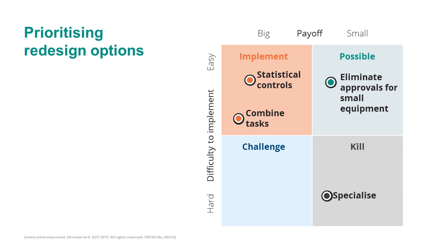Two redesign options related to improving communication: making the site engineer aware of when they will receive a piece of equipment, and asking whether they need an extension for equipment they are holding. These are relatively difficult to implement because they require suppliers to inform us of equipment dispatch at the right moment — changes in supplier processes that are generally hard to obtain. On the other hand, they can have a relatively big payoff by giving much more visibility to the site engineer regarding the status of their requests.